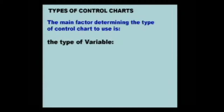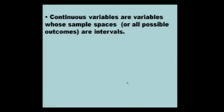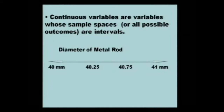There are many types of control charts, but they are divided basically by the types of variables that we have to deal with. There are two types of variables: continuous variables and discrete variables. The continuous variables are variables whose sample spaces, or all possible outcomes, are intervals. When we talk about diameter of some rod or pipe, when we talk about people's income or students' grades, all of these are continuous variables, meaning the variable can take on any values.